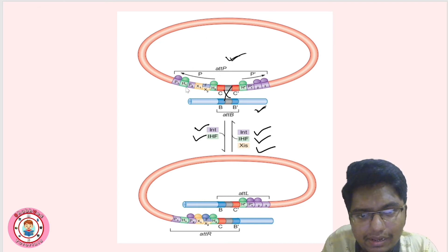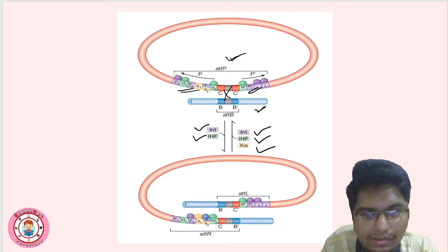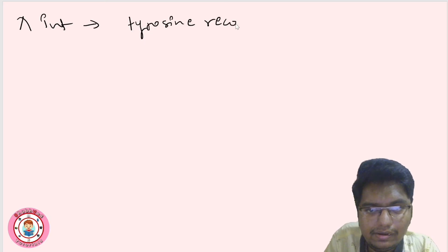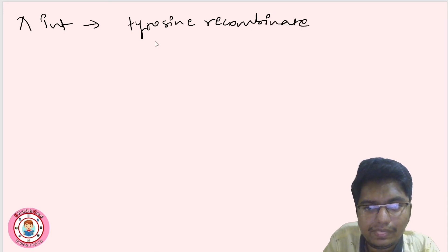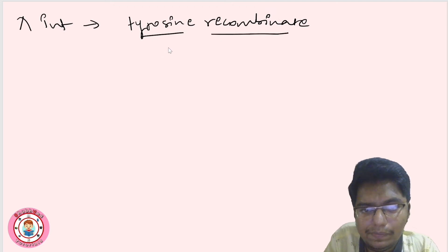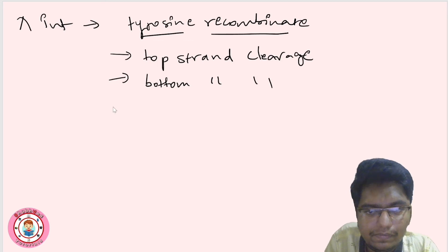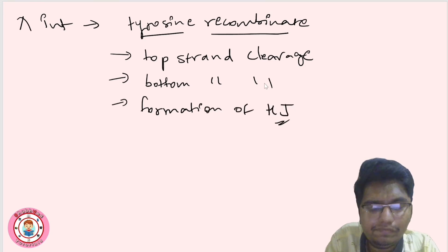Lambda integrase is a tyrosine recombinase. As discussed in the previous video, tyrosine recombinase first performs top strand cleavage, then bottom strand cleavage. This leads to the formation of a Holliday junction. This is the key highlight of tyrosine recombinase activity.